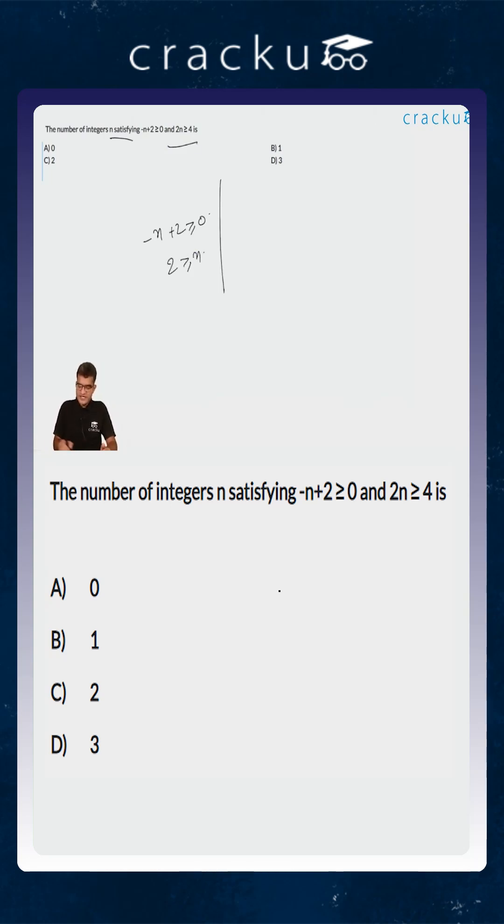Similarly, if 2n is greater than or equal to 4, it would imply that n is greater than or equal to 2.